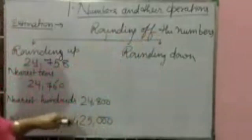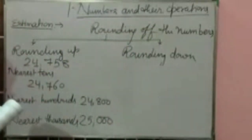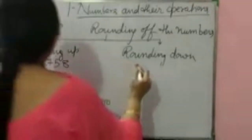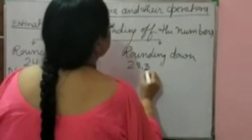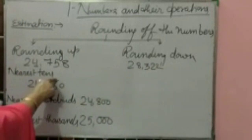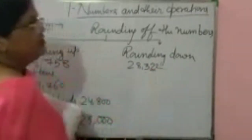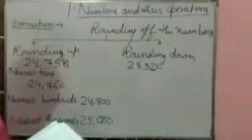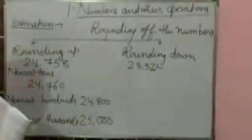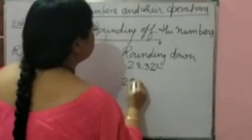Rounding off numbers to the nearest tens. Suppose the given number is 28,322. For nearest tens, underline the digit which is in the tens place. 2 is in the tens place. Just after 2, to the right hand side, is 2. Since 2 is less than 5, this digit does not change. So the new number for nearest tens is 28,320.